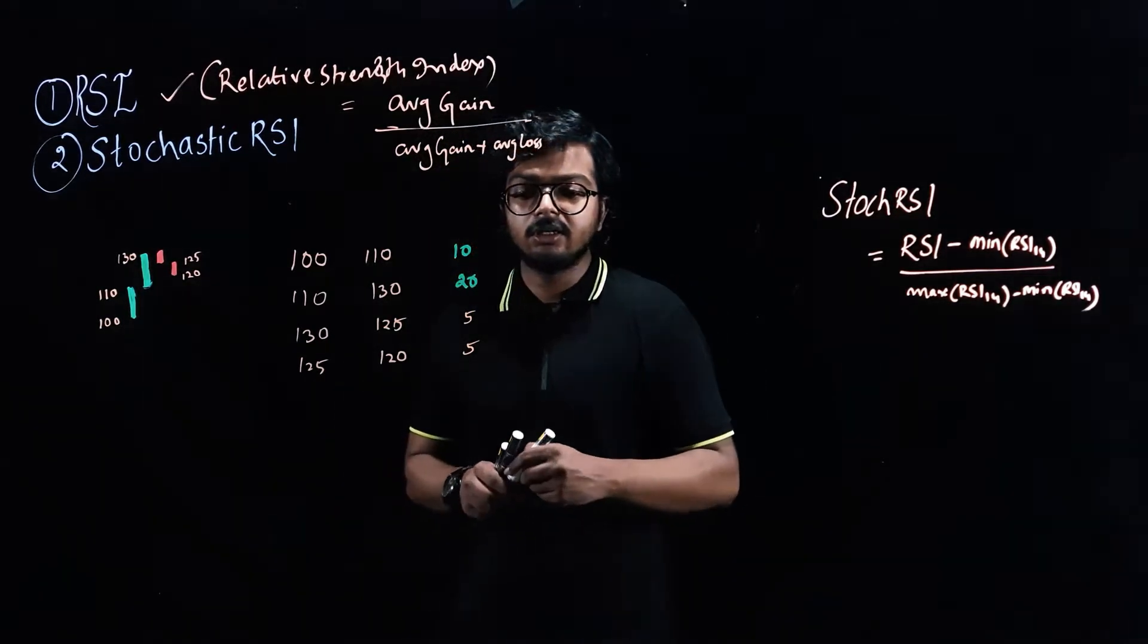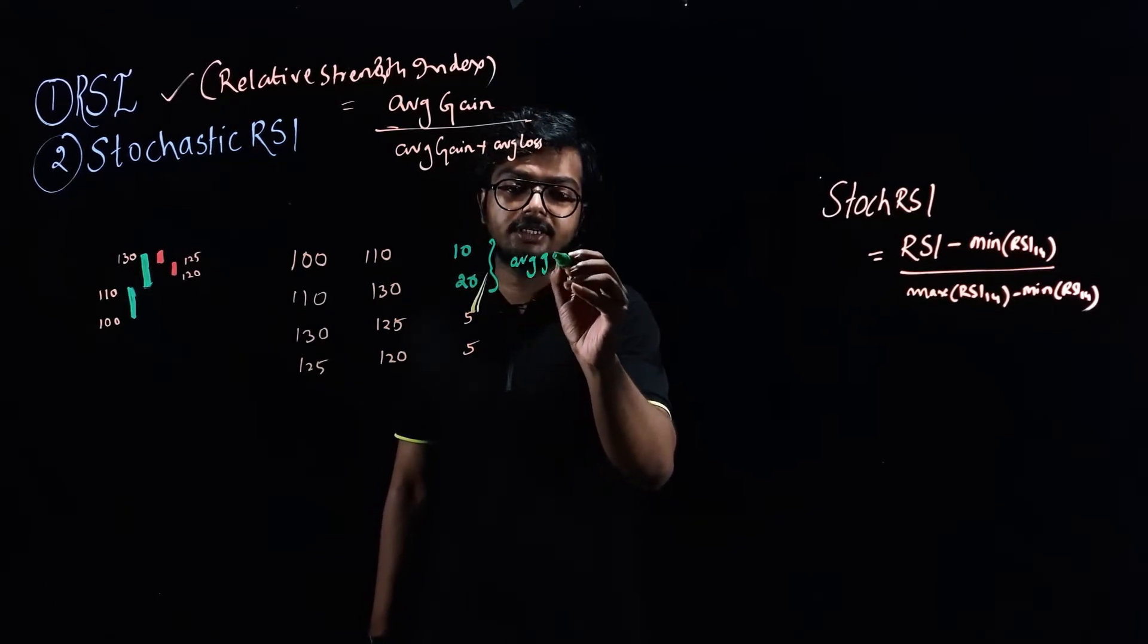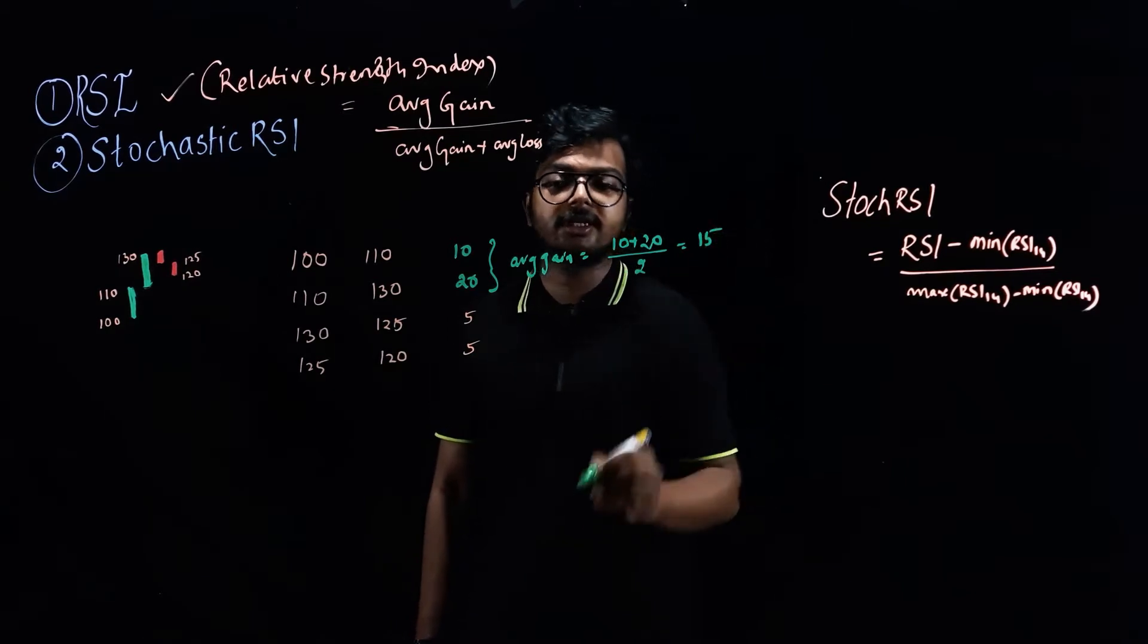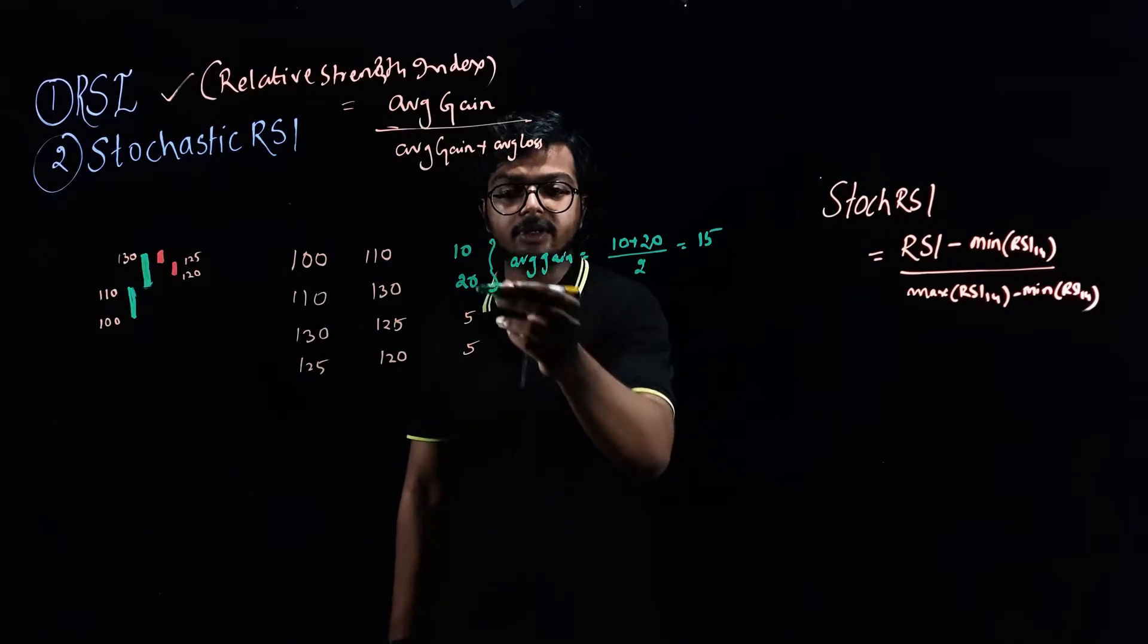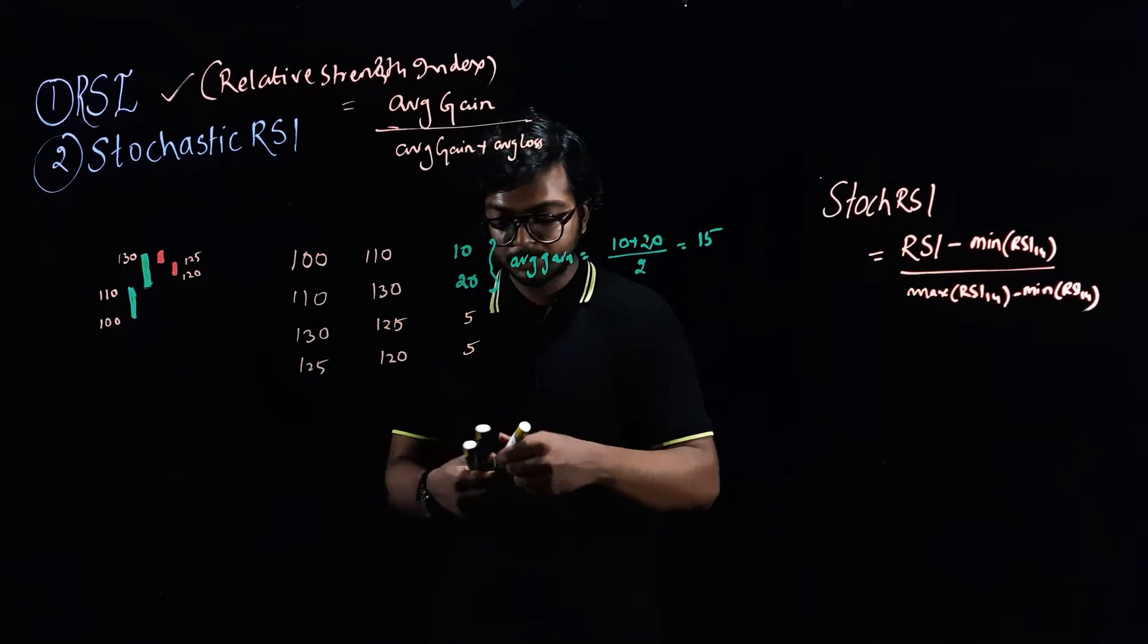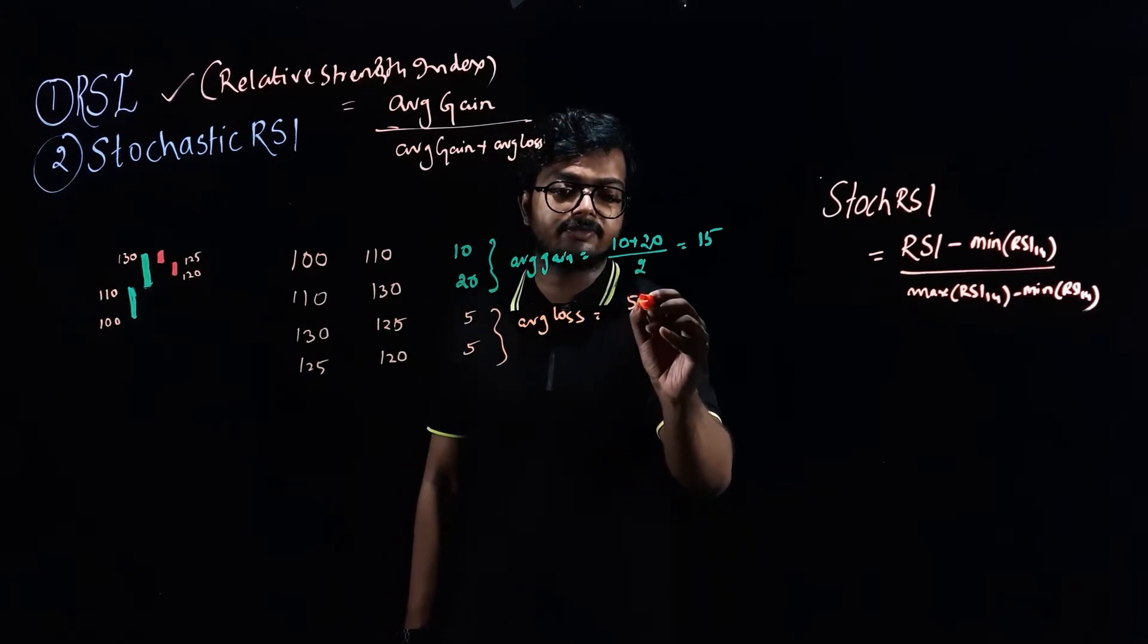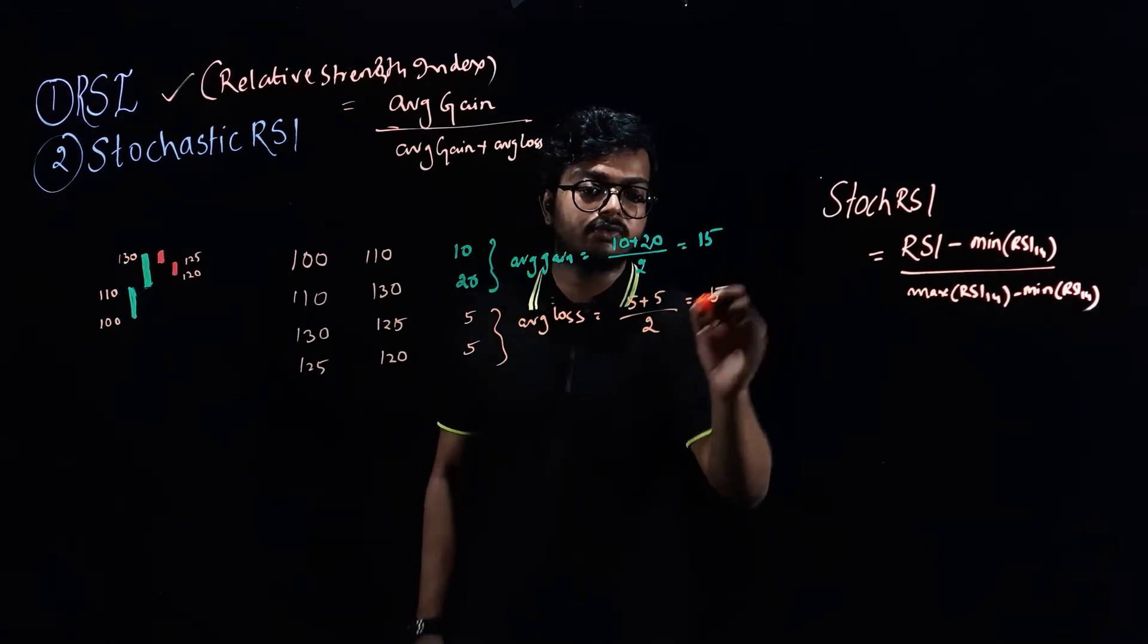So the average gain here, in this case, would be 10 plus 20 divided by 2, that is 15. So total gain divided by the number of times the gain has been made, that is 1, 2. Similarly, now let's see the average loss. Average loss would be total loss, that is 5 plus 5 by number of times the loss was made 2 times. So this is equivalent to 5.